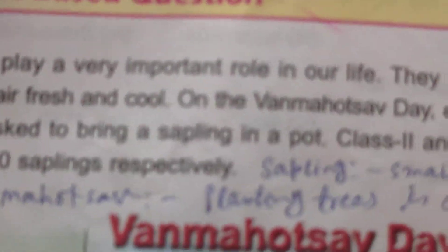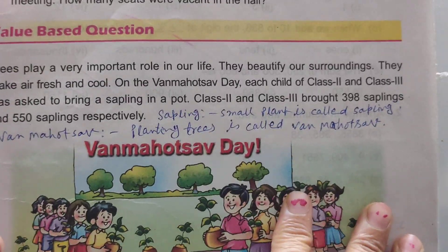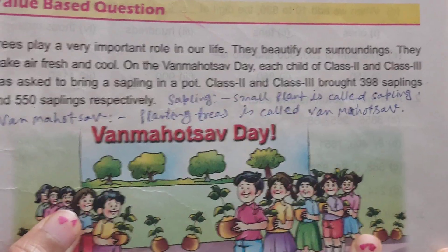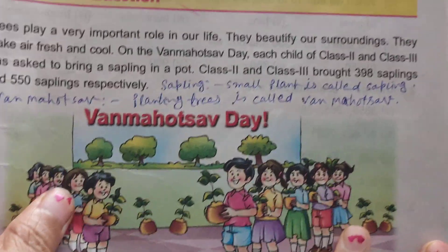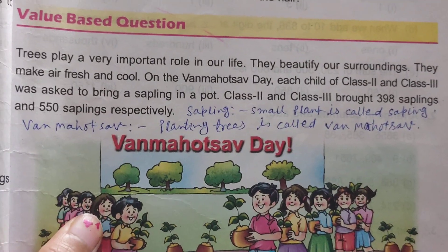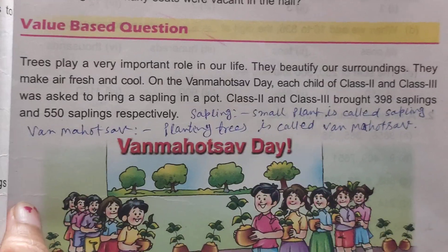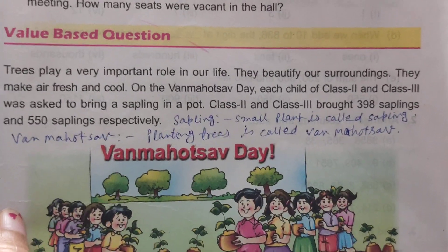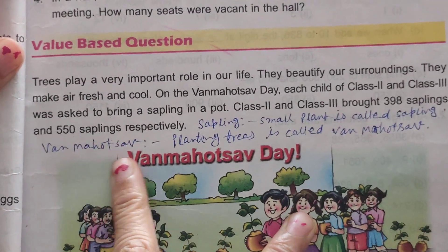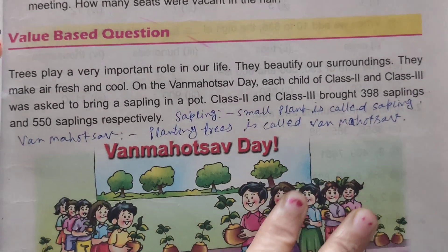Now, what is saplings? A small plant is called a sapling. And what is 1 Mohatsub? Planting trees is called 1 Mohatsub.